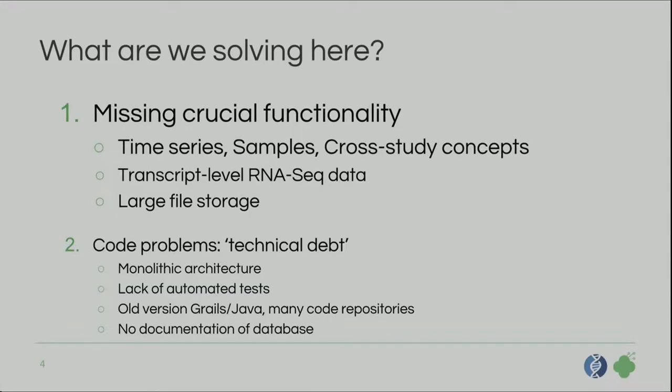So the backstory — what are we trying to solve? Missing functionality is definitely the most important part here. Time series, samples, cross-study concepts — this is stuff that used to be in I2B2 that we don't have in Transmart anymore, which is really necessary to fix, so we can implement our datasets in the same way. Other functionalities: transcript-level RNA-seq data is a data type that we will be adding, and also support for large-scale file storage.